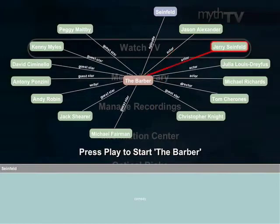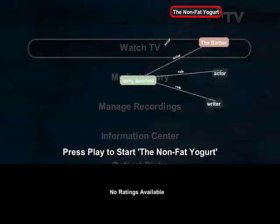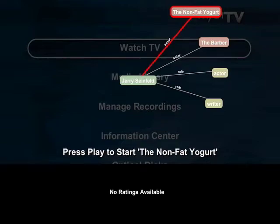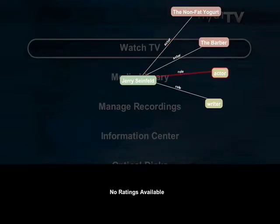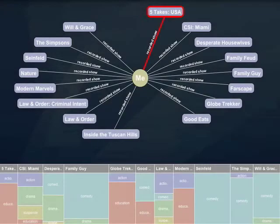We are currently looking at the egocentric home screen. In the center of the graph is a 'me' node, which represents the user. In this case, all of the nodes shown radiating from the center are series the user has recorded.